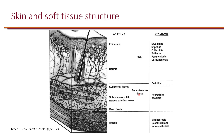In the subcutaneous tissue, we have superficial fascia. Under it, we have subcutaneous fat, nerves, and arteries and veins, followed by deep fascia, and of course muscle underneath. Depending on which layer is involved, we will discuss specific infections based on how deep we go into the skin structure.